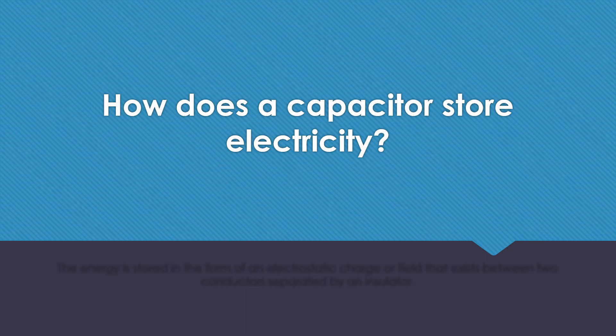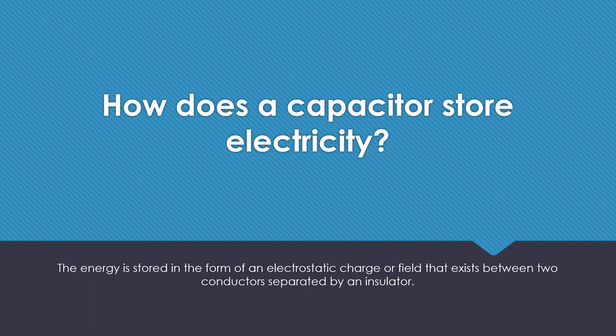How does a capacitor store electricity? The energy is stored in the form of an electrostatic charge or field that exists between two conductors separated by an insulator.